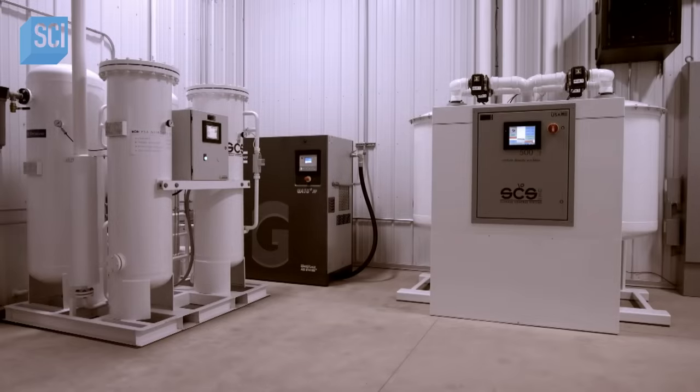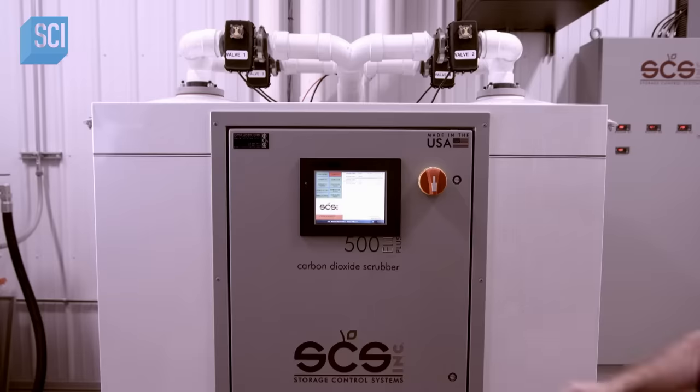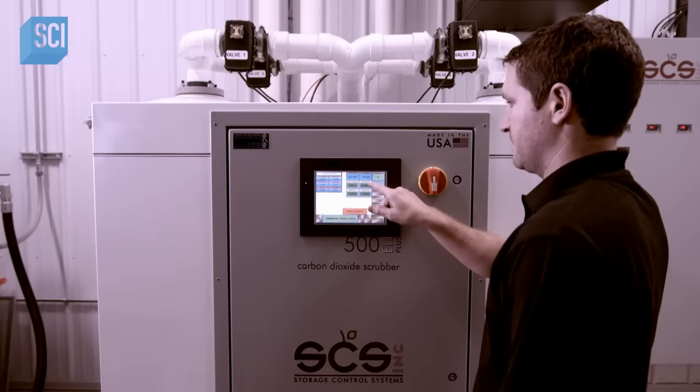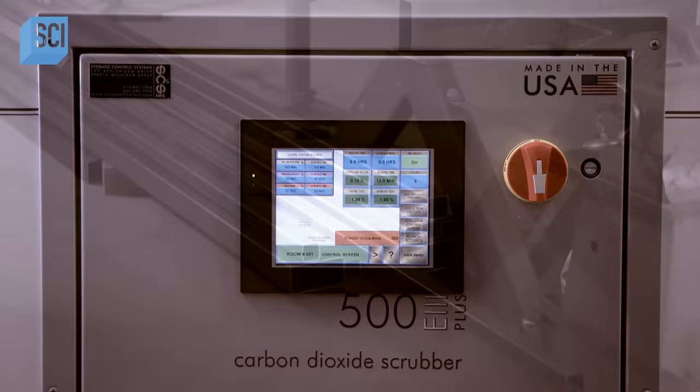This CO2 scrubber pulls air from the airtight apple storage room through carbon pellets which absorb the CO2 gas molecules. The machine then blows the CO2 free air back into the room.